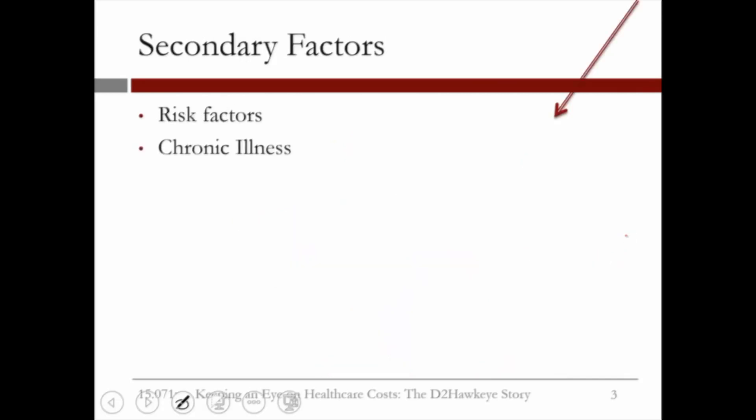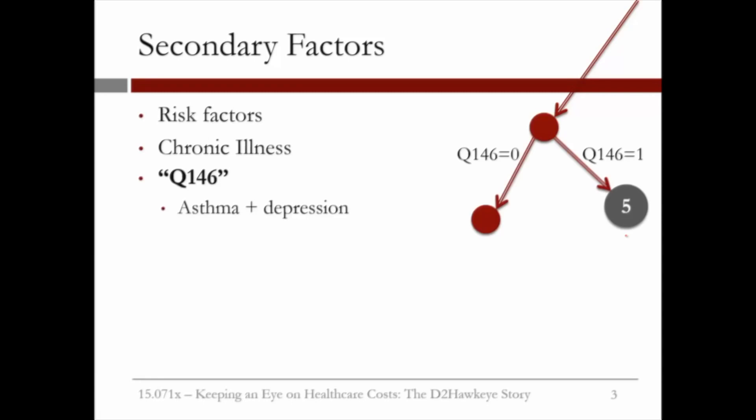As the tree grows, the secondary factors utilized later in the classification tree involve various chronic illnesses and some of the medical rules we discussed earlier. For example, whether or not the patient has asthma and depression.